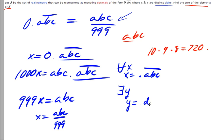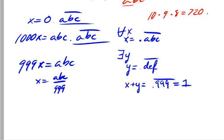such that y equals point def repeating, such that x plus y equals point 999 repeating, which equals 1. Now, why is this the case?